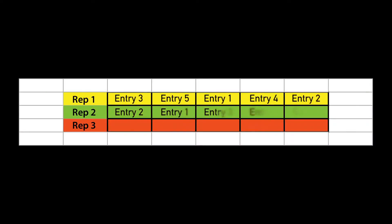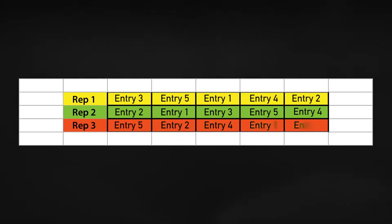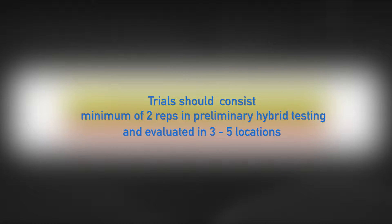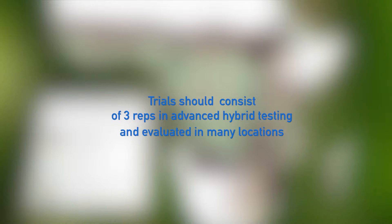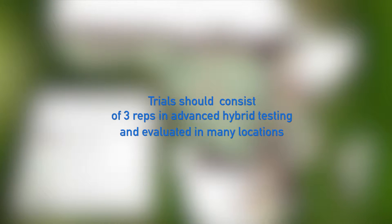Effective trial management begins with sound experimental design. Due to high levels of field variation, replication both within trials and across sites is important. In preliminary hybrid testing, trials should consist of a minimum of two replications and may be evaluated in three to five nitrogen stress locations. In advanced hybrid testing, trials should consist of three replications and should be evaluated in as many nitrogen stress locations as possible.